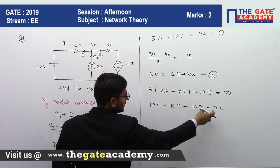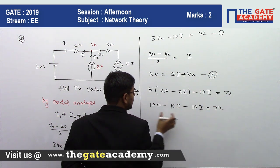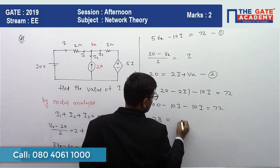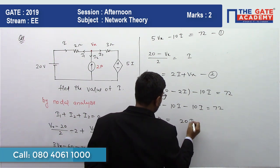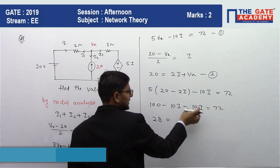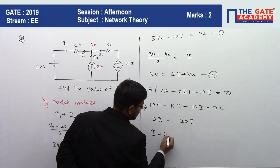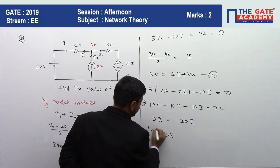From there, just subtract 72 from 100, we can get 28. And from there we can get 20I, because 10I plus 10I equals 20I. Then value of I equals 28 upon 20.